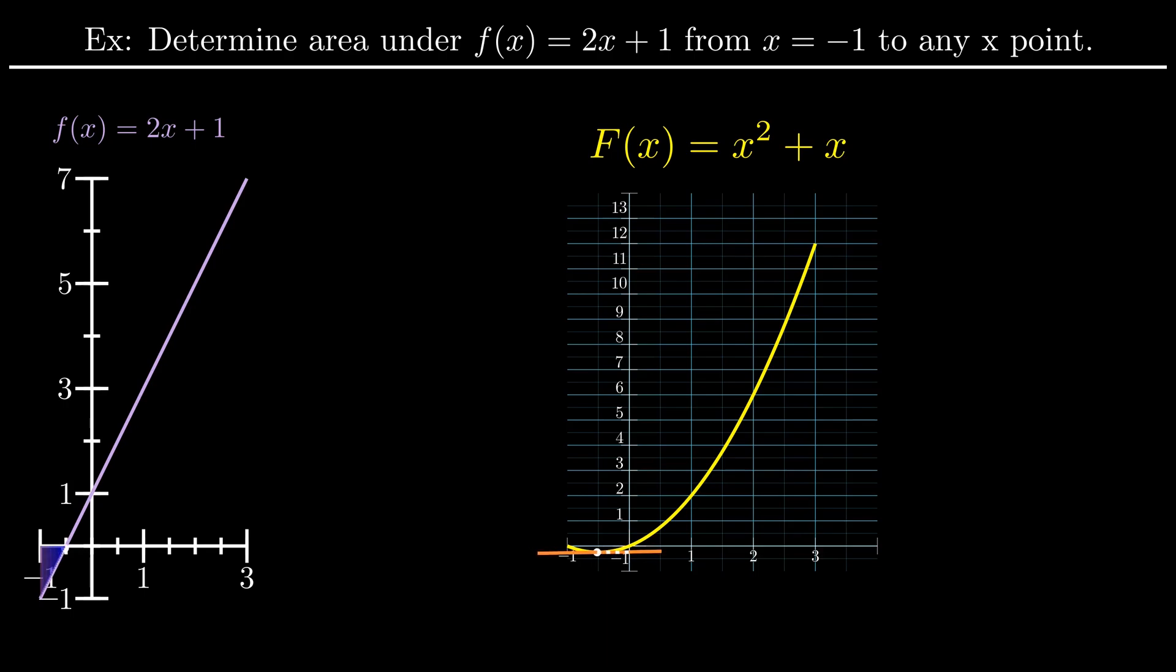So, if the y values on the linear function are negative, the result on the parabola will decrease. At the same time, if the y values on the linear function are negative, the area under the function will also be negative. So whatever the value of the area is, it should be decreasing.